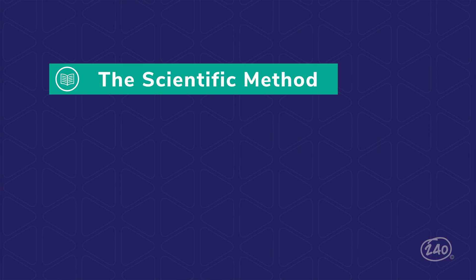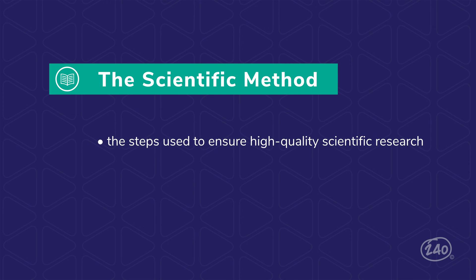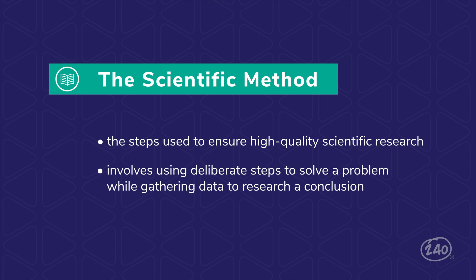The Scientific Method is defined as the steps used to ensure high-quality scientific research. It involves using deliberate steps to solve a problem while gathering data to research a conclusion. The Scientific Method is used to guide scientists through the steps of planning the process of conducting the experiment. It's important to remember that the Scientific Method is not a linear path. After forming a conclusion, a new or revised hypothesis might be formed, sparking a new experiment.